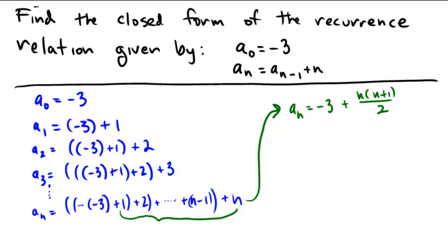So actually that completes the problem — that's the recurrence relation solved in closed form, and we can just plug in n. But just for simplicity, or for politeness' sake, let's see if we can simplify this a bit.